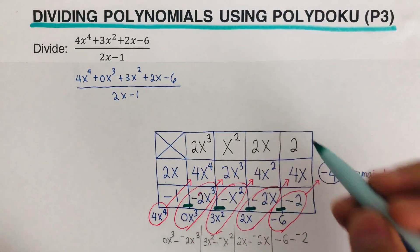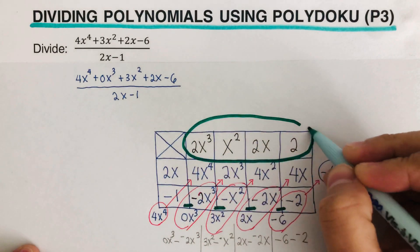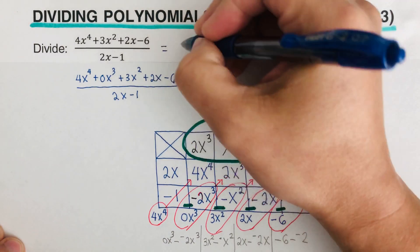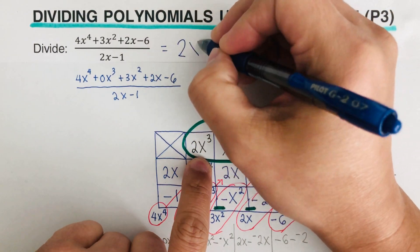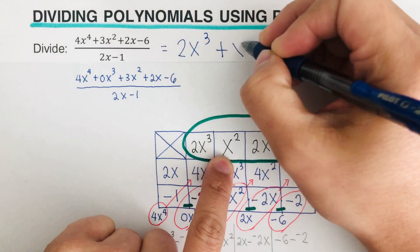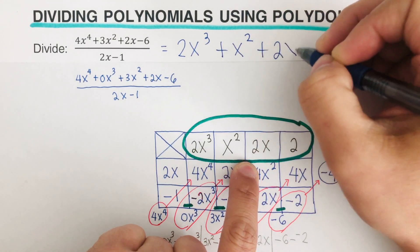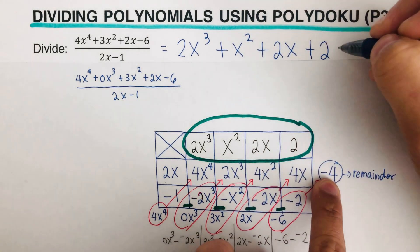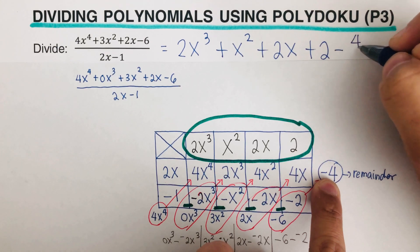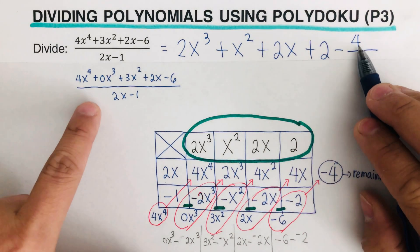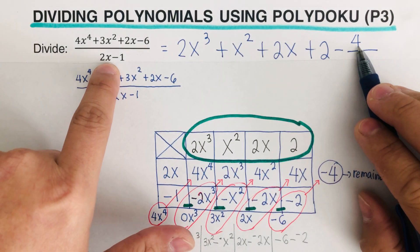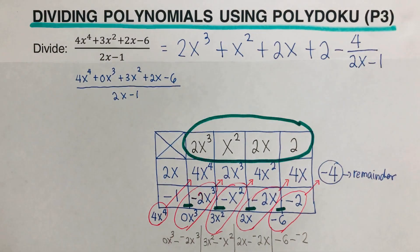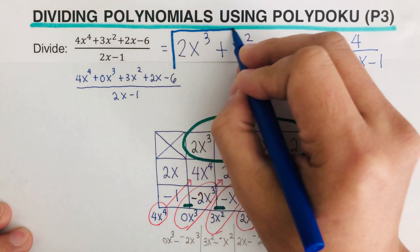So when we divide these two polynomials, the quotient is: 2x cubed plus x squared plus 2x plus 2, and there is a remainder of negative 4. So we write minus 4 over the divisor, 2x minus 1. That is the quotient of this expression.